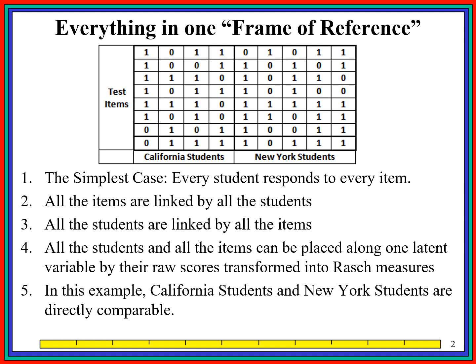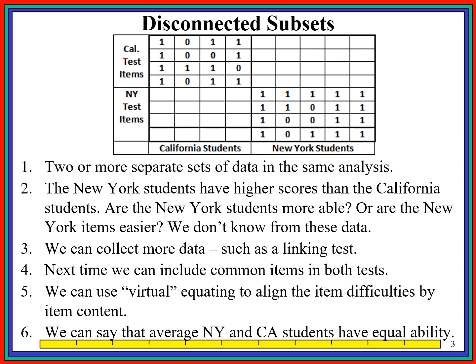We can think of the simplest case, which is everybody responds to every item, but if there's missing data, things are still comparable until we get to a more complicated situation. Here we can see that the California students have responded to the California items, and the New York students have responded to the New York items. What if the California students have higher scores? Does it mean the California students are more able, or the California items were easier? These data can't tell us.